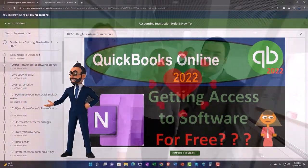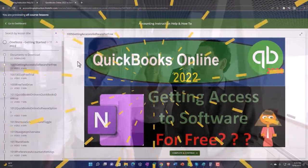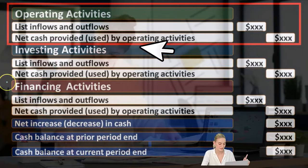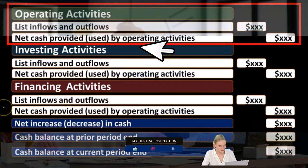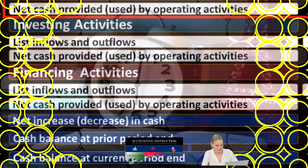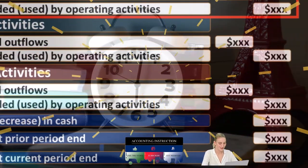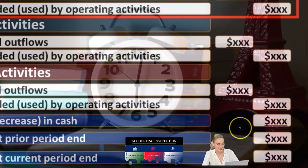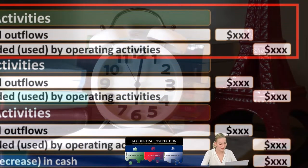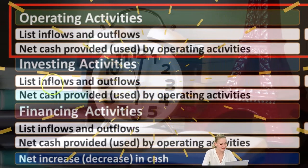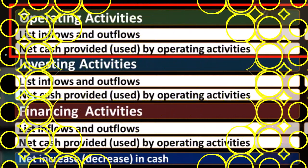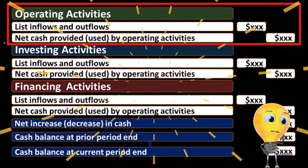The investing activities and financing activities will remain the same — we're going to end up at the same result, which of course will be the ending cash that we can tie out to the balance sheet. We'll have the change in cash, which is really what we're looking for in the statement of cash flows. What's going to differ is the operating activities.